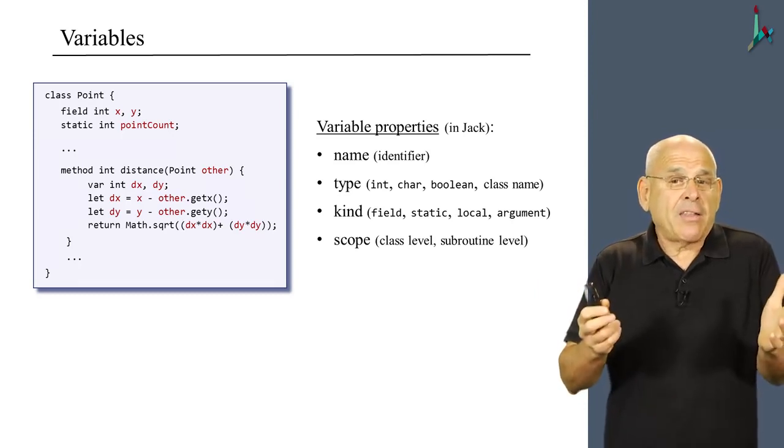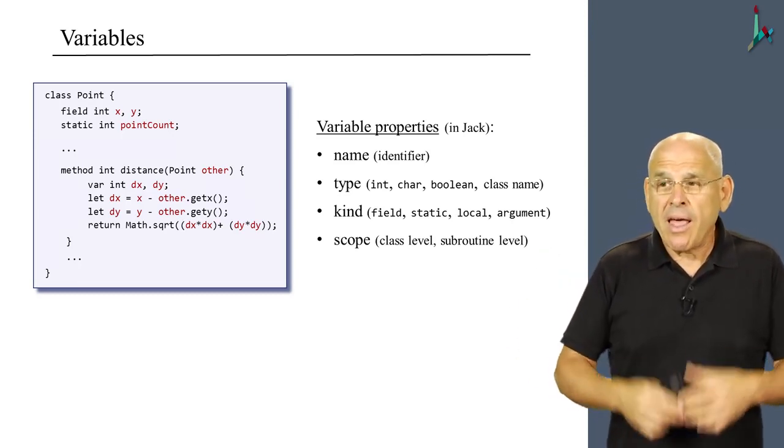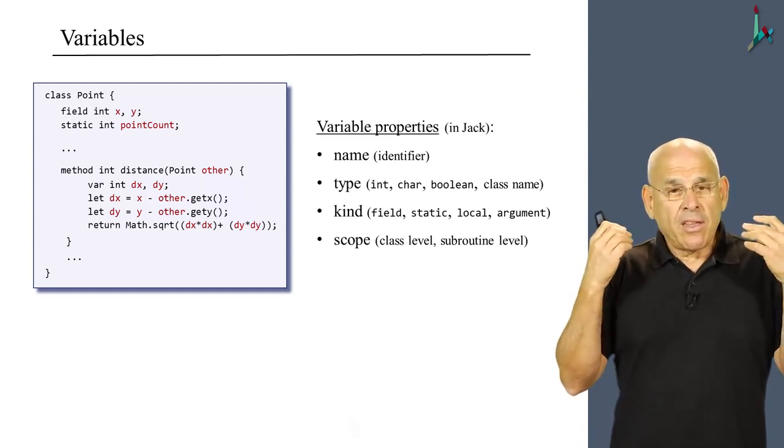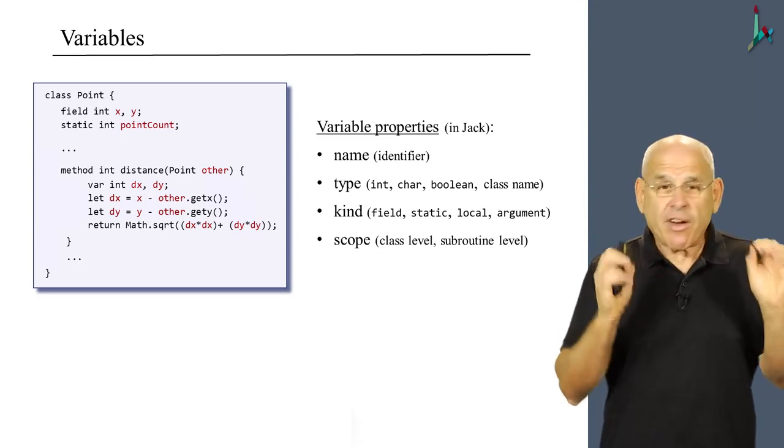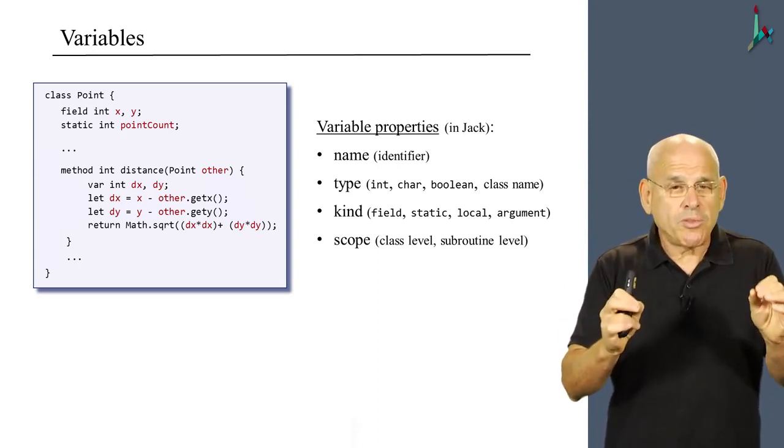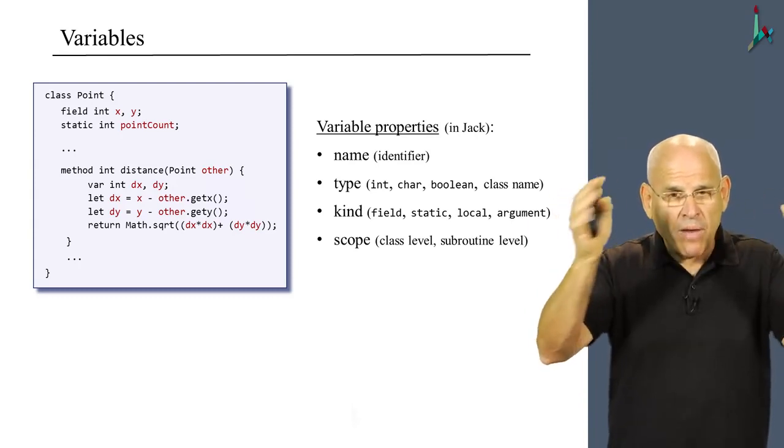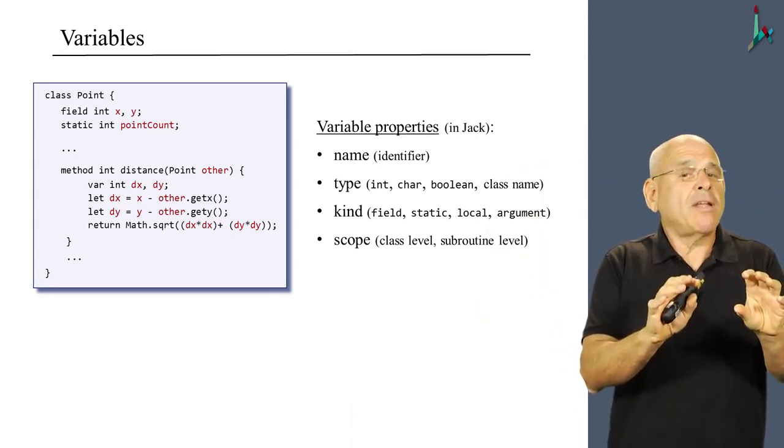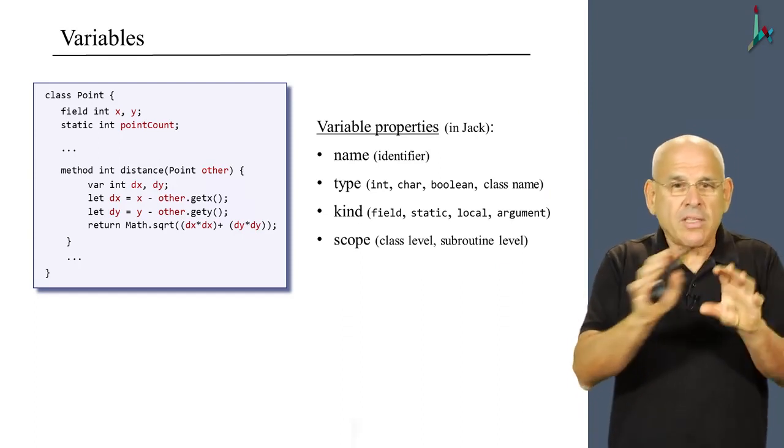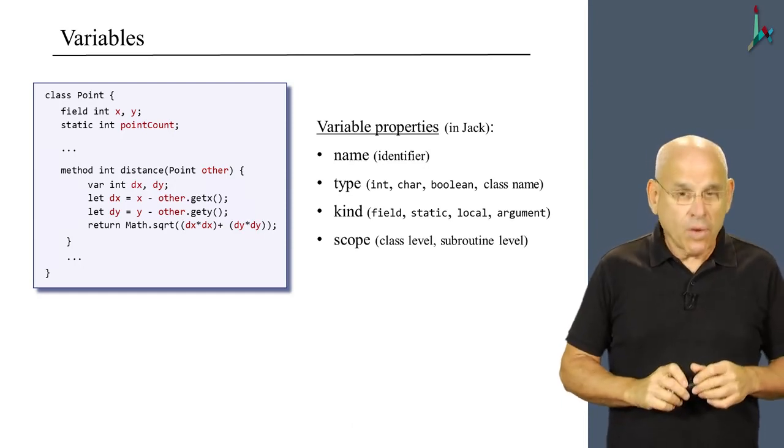Three fixed primitive types and as many class types as necessary. Then we have the kind of the variable, which is either field, static, local, and argument. And finally, we have the scope of the variable, which in the Jack language is very simple. You have only two scopes. You have a class level scope, where these variables are recognized throughout the class. And we have subroutine level scope, which is the scope of the subroutine, the specific subroutine that you're compiling only.